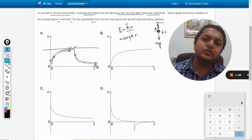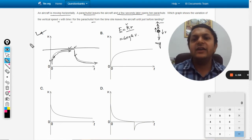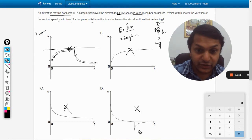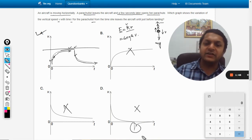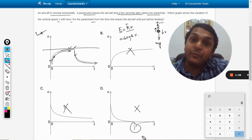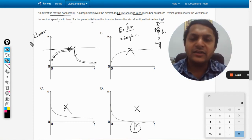After that it will keep moving with constant velocity. So A should be the correct answer. B is wrong, C is wrong, and D is definitely wrong because velocity cannot become negative - negative velocity means the parachutist will start moving upwards, which is not possible. Definitely A is the answer.